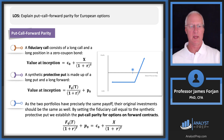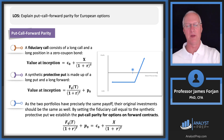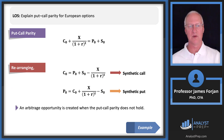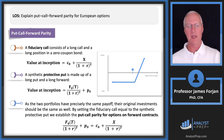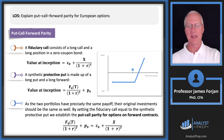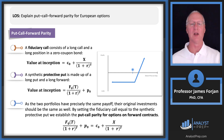Put-call-forward parity: all we're going to do is substitute a forward contract for the underlying asset. On the right-hand side we have the call plus the present value of the bond; on the left we have the put option. We substitute the forward contract in for the underlying stock, giving us put-call parity for options on forward contracts. So you have the derivative and then the double derivative — a synthetic protected put built on a forward.